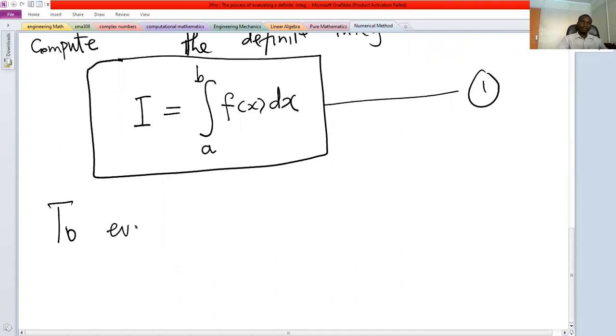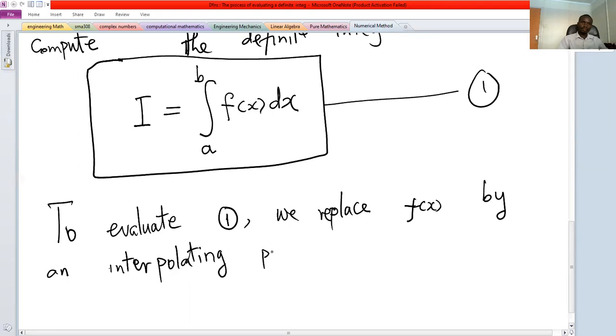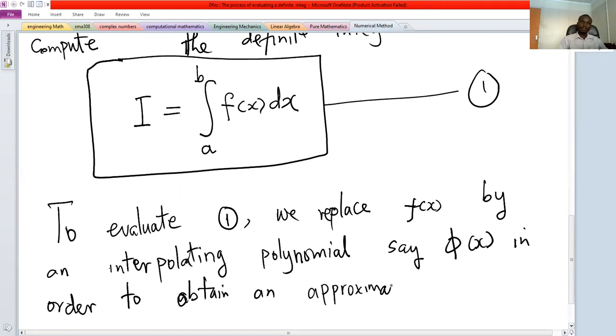To evaluate the integral in equation one, we replace f(x) by an appropriate interpolating polynomial, say φ(x), in order to obtain an approximate value of the definite integral.